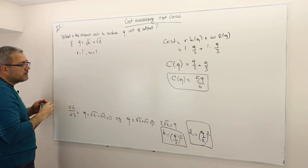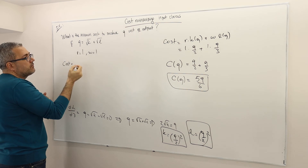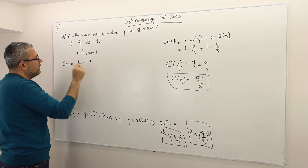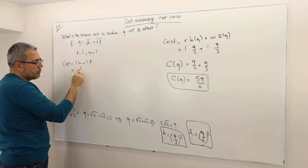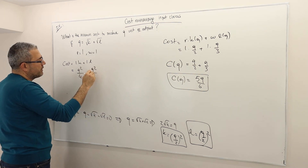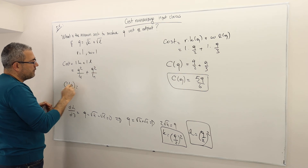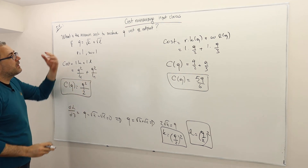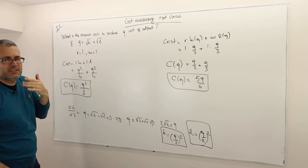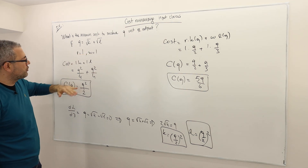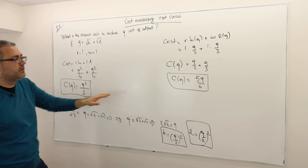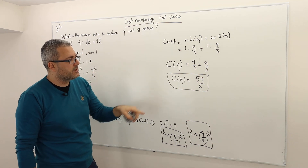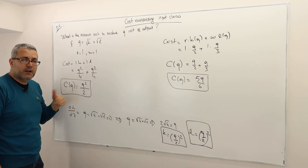What is the cost function? Cost equals R times K plus W times L. K equals Q² divided by 4 and L is also Q² divided by 4. So C(Q) equals Q squared divided by 2. Same input prices but a totally different production function gives a totally different cost function. In the first example the marginal cost is 5 over 6 — a constant. Here, however, the marginal cost is a function of Q.